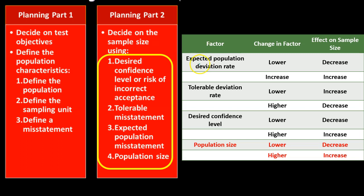We have seen a similar factor table in prior presentations when applying statistical sampling to tests of controls. The table shows the relationships between these items — the factors, the change in the factor, and the effect on sample size. The key difference in this table is that population size has more of an effect on sample size compared to control testing.